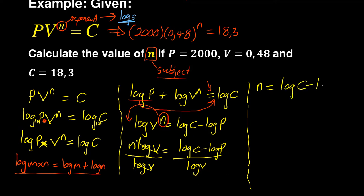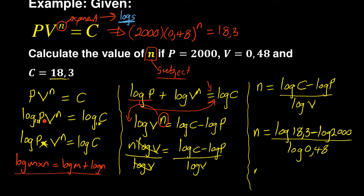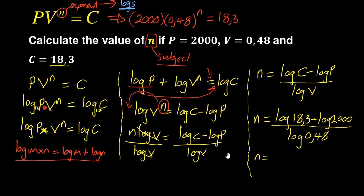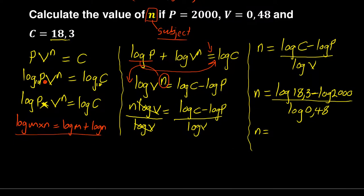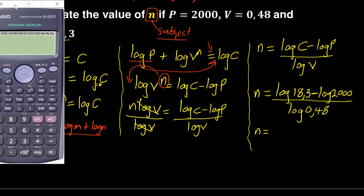It is at this stage that I can therefore substitute. My n is equal to log... what is my C? They told me my C was 18.3, so I'll have log 18.3, minus log... what is my P? It is 2000, all over log V. So I've got log and my V is 0.48. You see now where I introduce substitution? It is at the last stage after I have managed to make n the subject of the formula.